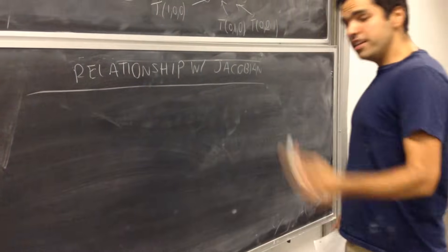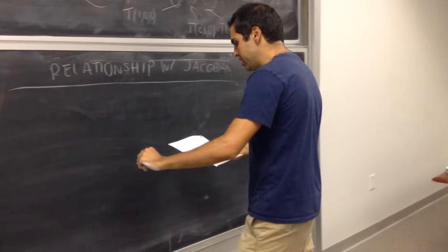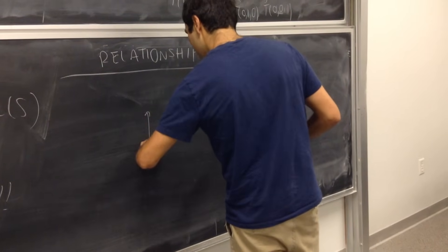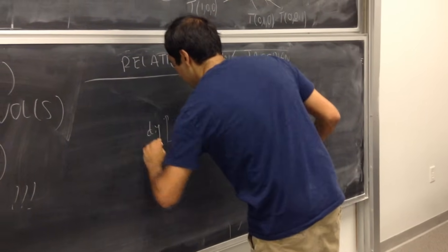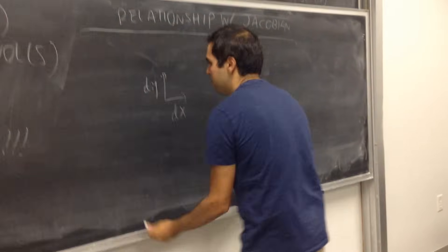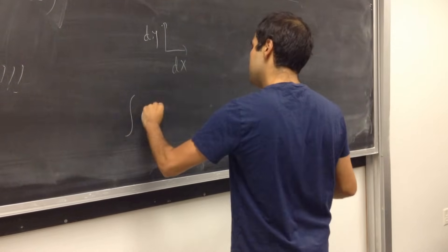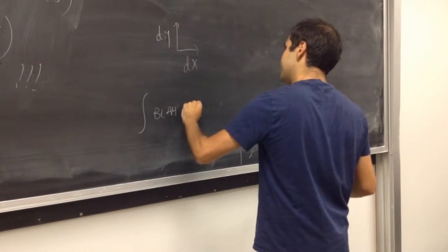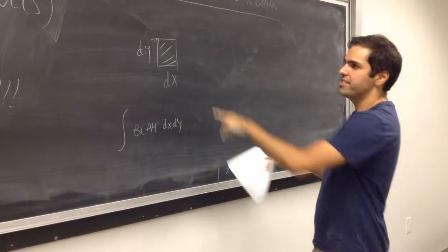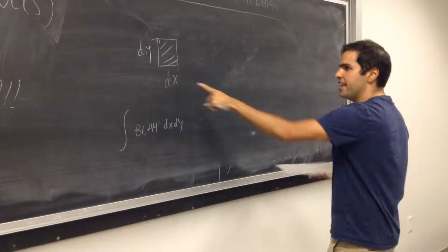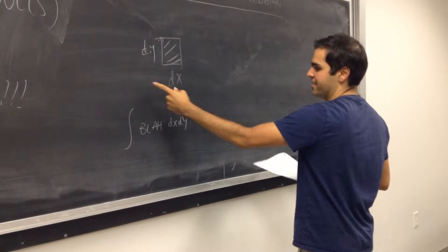Because, what is a change of variable? Suppose you have x and y, and you have some integral with dx and dy. So, maybe integral, blah, dx, dy. Well, you can think of it as a square with sides dx and dy, and the area is dx dy.